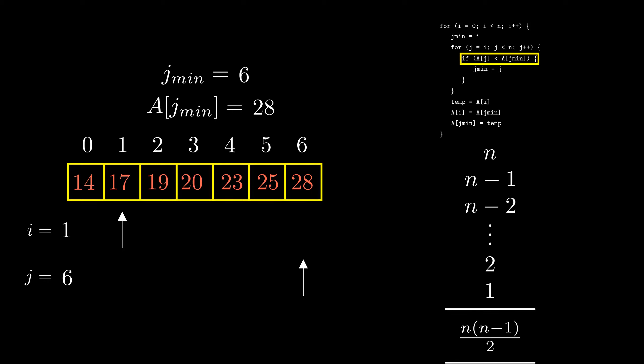We sum up all the elements that we found out, all these numbers that we found out. It is n times n-1 divided by 2, which is an order n squared expression. Thus the complexity of selection sort is order n squared.